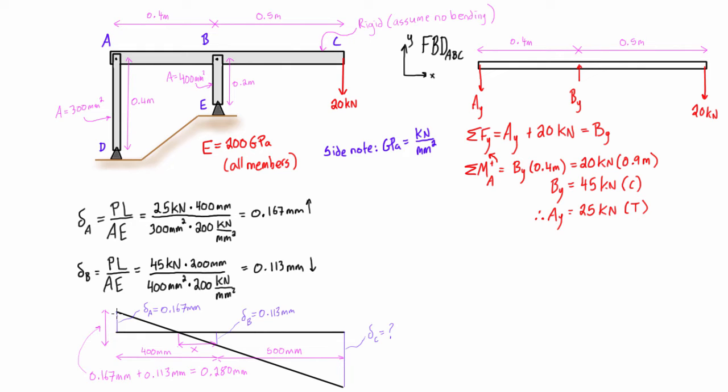So the first thing that we do is we'll find the triangle, we add the heights of displacement A and B, so we get 0.280 millimeters, that is the height of that triangle, and the base of that triangle we know is 400 millimeters.